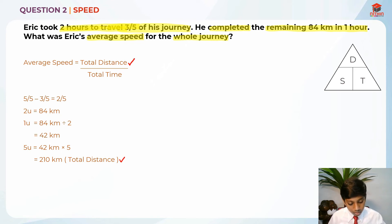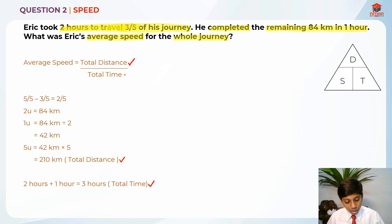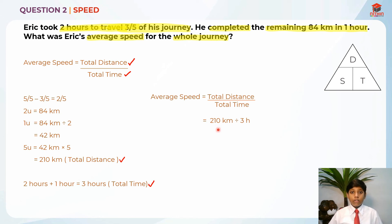We need to know total time now. 2 hours plus 1 hour is total time, so it's really easy to find — it's 3 hours. Now it's really easy to find the average speed because we have both values. Average speed equals total distance over total time, which is 210 ÷ 3 = 70 kilometers per hour.